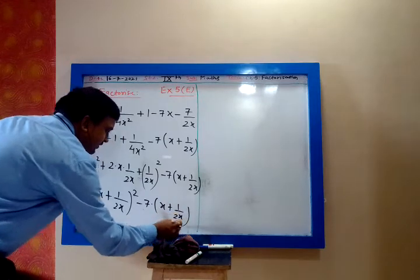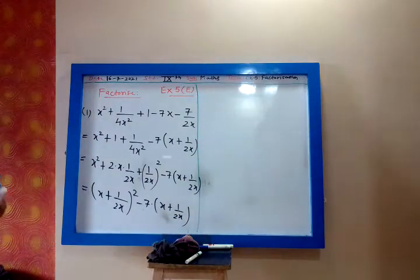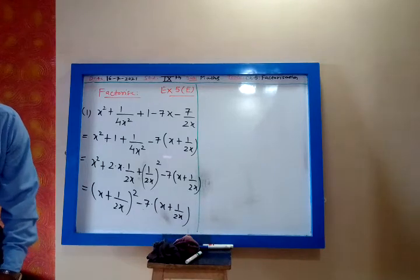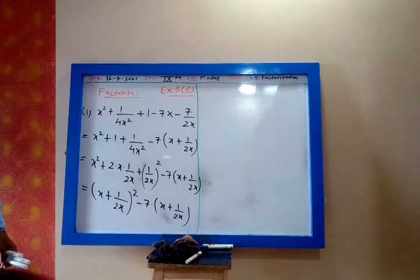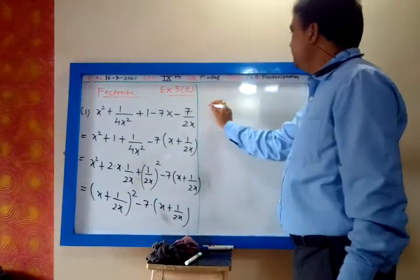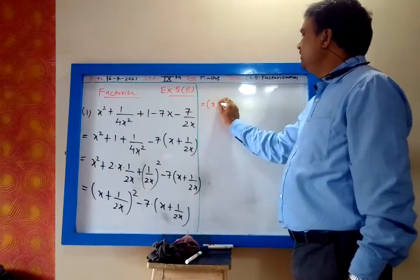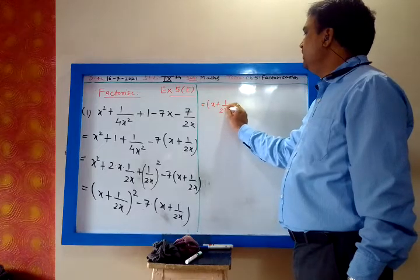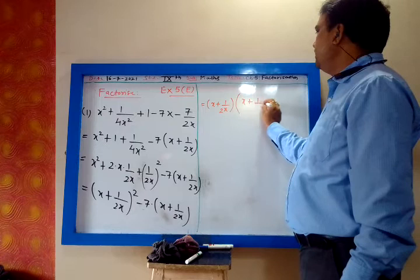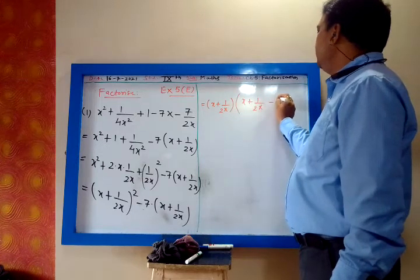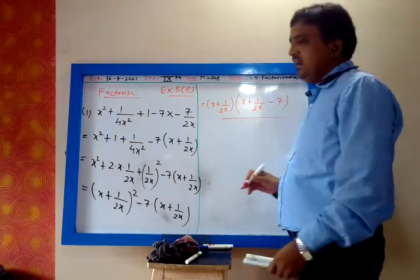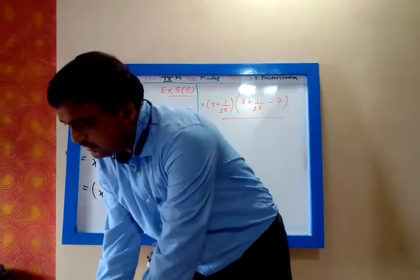Now (x + 1/(2x)) is common. So I will take (x + 1/(2x)) common, and what is left is (x + 1/(2x)) minus 7. This is the answer — a factorization because it is a product of 2 factors.